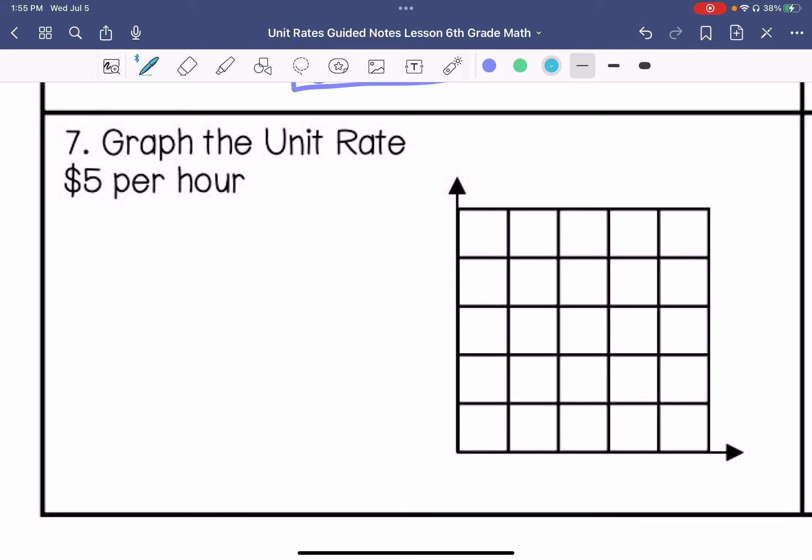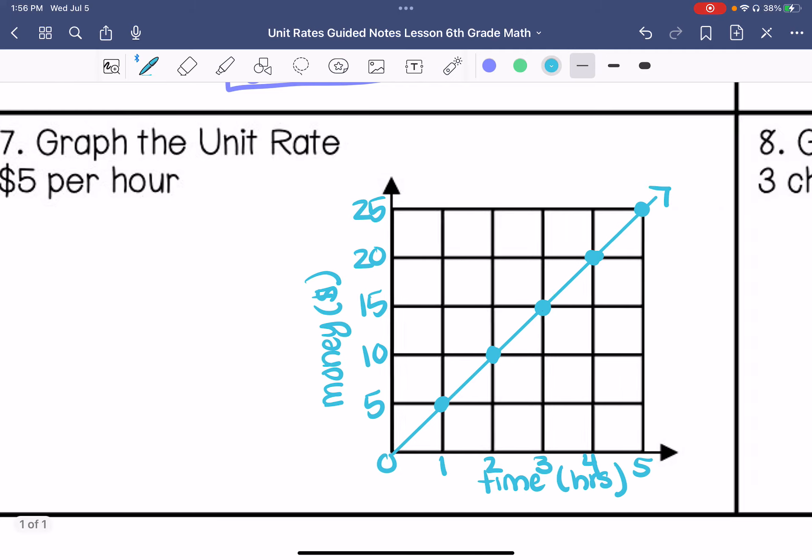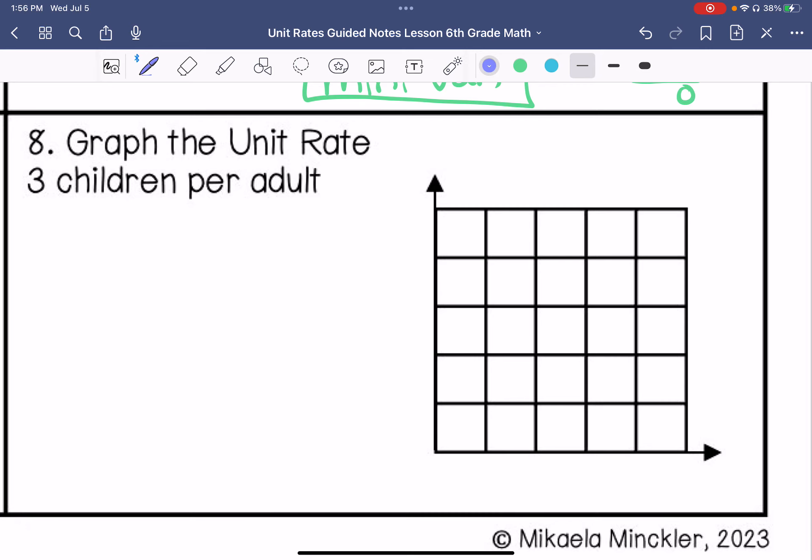This says to graph the unit rate five dollars per hour. So I'm going to do time on my x-axis, this is hours. Start zero one two three four five. And then my y-axis is going to be money in dollars. We count by fives: five, ten, fifteen, twenty, twenty-five. So for one hour we make five dollars, two hours we make ten, three hours we make fifteen, four hours we make twenty, and five hours you make twenty-five. So that's how I'd graph that unit rate.